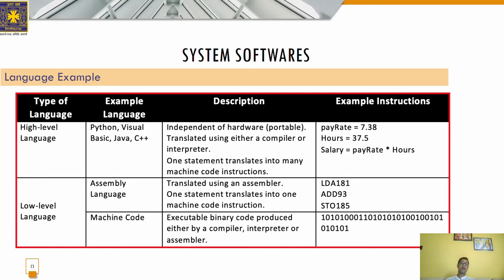Now comes high level language. The language that uses English-like statements and is completely independent of machines is known as high level language. Programs written in high level language are easy to create, read, and understand. High level language has to be converted to its equivalent machine level language so that it can be understood by the hardware. Some high level languages are C, C++, Java, Fortran, QBasic, Pascal, etc.